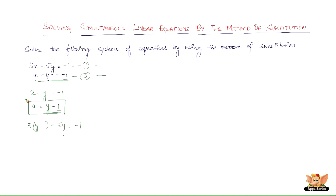By doing this, we are making this equation a linear equation in one variable. We are eliminating one variable so that it is no longer a linear equation in two variables. You cannot solve a linear equation in two variables directly, so by doing this we reduce it to one variable. Once we find the value of y, we can substitute it back into one of the equations to find x.